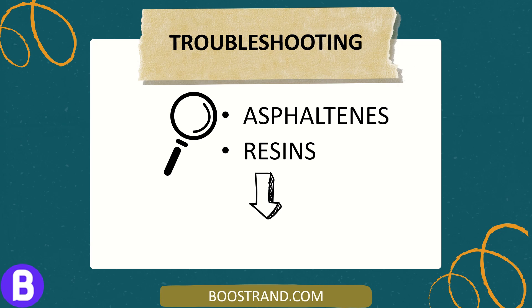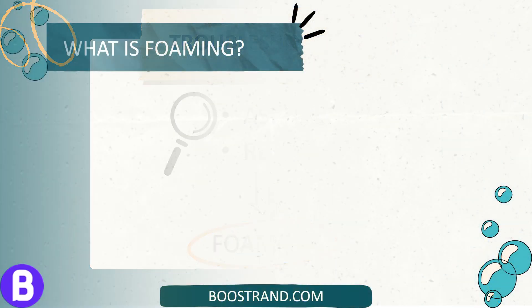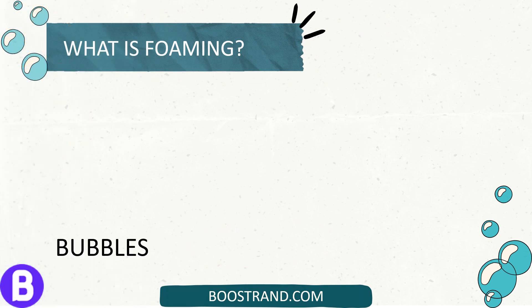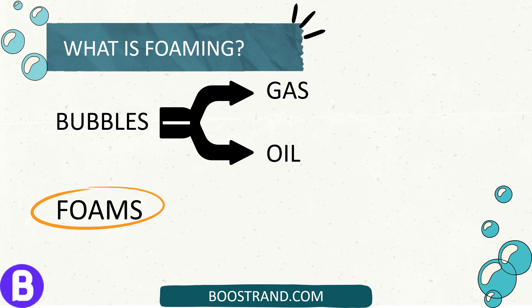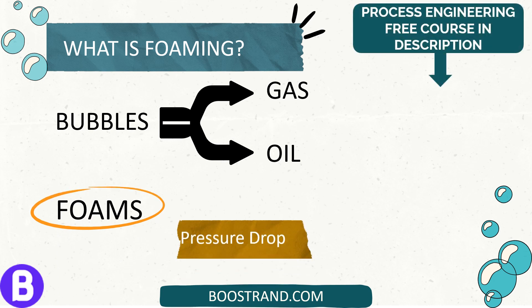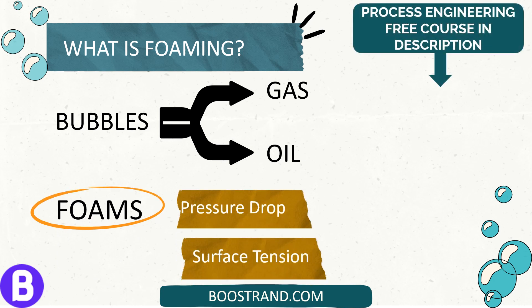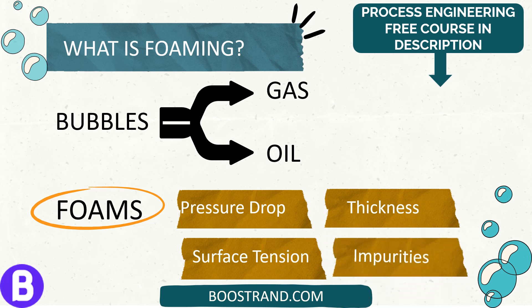The issue with these fluids is that they caused foaming inside the separator. Foam is like tiny bubbles of gas covered with a thin layer of oil. This makes it harder for the gas and oil to separate efficiently. Foam shows up where the gas and oil meet when the pressure in the separator drops, or because of things like surface tension, thickness of the liquid, and impurities in the oil.